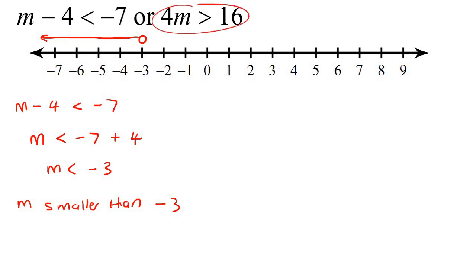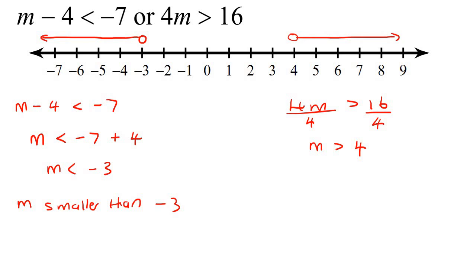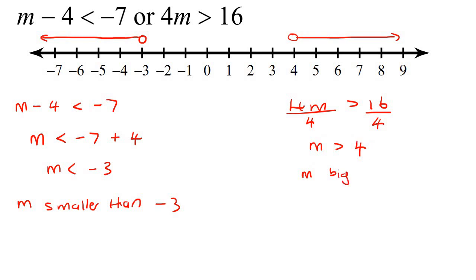Now we're going to solve this one. Four M is bigger than 16. All we do for this one is divide both sides by four, and so M is bigger than four. So we go to the four, open circle, and we just draw a line going to the right, because it means that M is bigger than four.